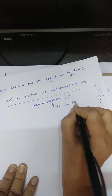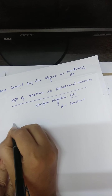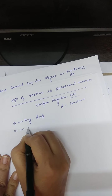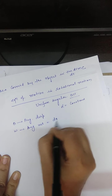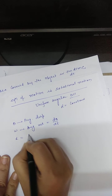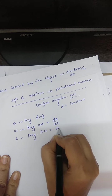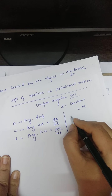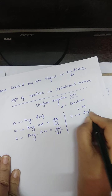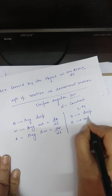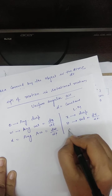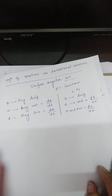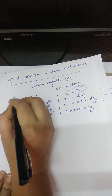In rotational motion: theta is the angular displacement, omega (= dθ/dt) is the angular velocity, and alpha (= dω/dt) is the angular acceleration. These are analogous to linear motion quantities: displacement x, linear velocity v (= dx/dt), and acceleration a (= dv/dt).